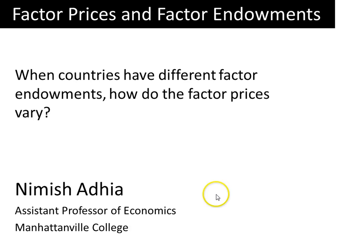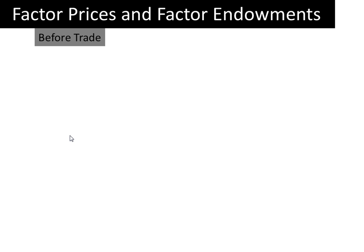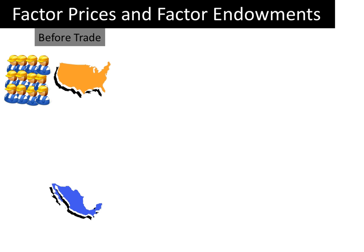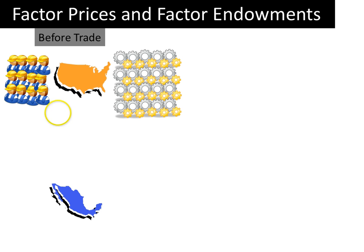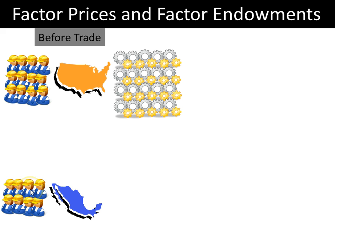When countries have different factor endowments, how do the factor prices vary? I'll explain this with an example. Suppose that there are two countries, the US and Mexico. Now there are two factors of production, labor and capital. There is a certain amount of labor in the United States and a certain amount of capital. Similarly, there is a certain amount of labor in Mexico and a certain amount of capital.